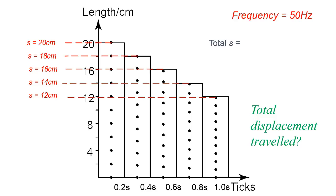The total displacement — you just need to sum all these five values: 20 plus 18 plus 16, plus 14 and plus 12, and you get 80 cm. The whole ticker tape is cut into five 10-tick strips, so you just need to sum all the lengths of the five strips.